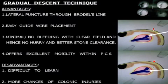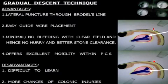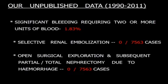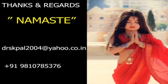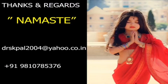The advantages of the gradual descent technique include: lateral puncture through Brödel's line, easy guidewire placement due to track alignment, minimal bleeding with a clear field, no time pressure, better stone clearance, and excellent mobility. Our unpublished data from 7,500 cases completed in 2011 showed blood loss was insignificant — transfusion was required in only 1.83% of cases and no case required renal embolization. We have now crossed 10,000 cases and still have not required angioembolization in any case.